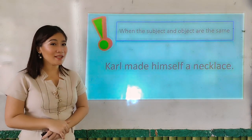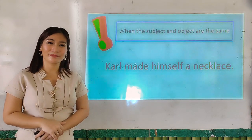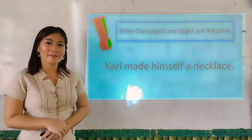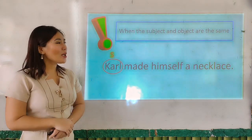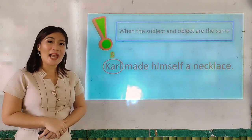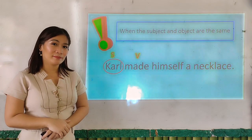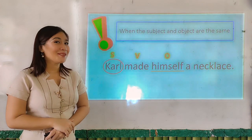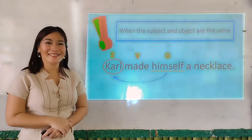Let's have another example sentence. Repeat after me: Carl made himself a necklace. Who is the doer of the action? Very good — Carl, he is our subject. What about the verb used? Yes, made. And what about the receiver of the action? Good — himself. And the word himself refers back to our subject, Carl.